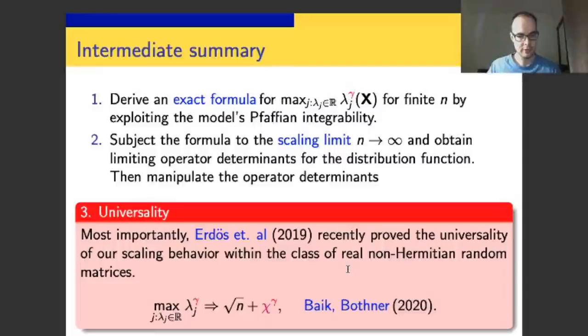This was proven by László Erdős and his collaborators less than a year ago. They showed that the scaling behavior we discovered on the level of the largest real eigenvalue in the real Ginibre ensemble is actually universal in a much bigger class of real non-Hermitian random matrices. In other words, this random variable χ here, or in the thinned version χ^γ, defines a new universality class. That's why the work is even more interesting now.